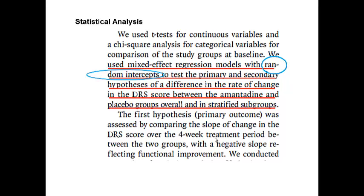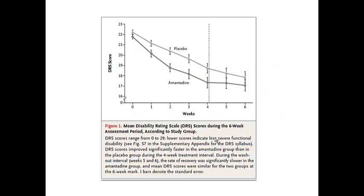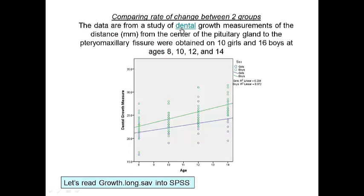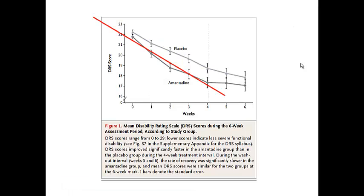We are going to repeat their analysis. Of course, we don't have access to their data, so we will use our classroom dataset — dental growth measurements. We are going to assess the rate of change in dental growth measurement between boys and girls. We have two groups to compare, and the primary outcome is the rate of change in the outcome variable over time — a similar setting to the paper.